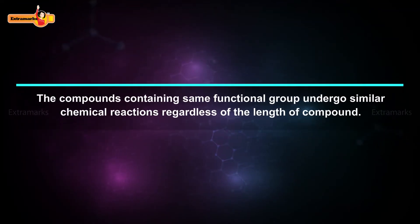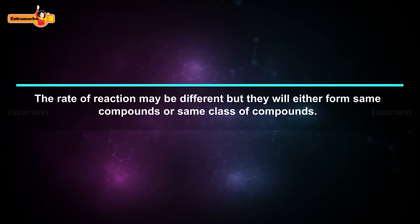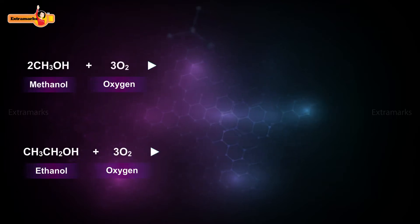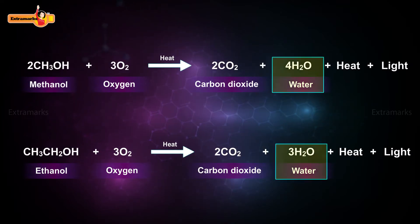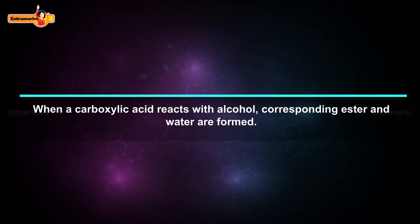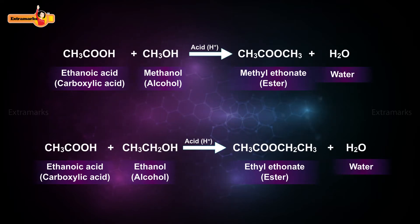The compounds containing same functional group undergo similar chemical reactions regardless of the length of compound. The rate of reaction may be different but they will either form same compounds or same class of compounds. For example, the combustion products of both methanol and ethanol are same that is carbon dioxide and water. When a carboxylic acid reacts with alcohol, corresponding ester and water are formed. Here two different esters are formed by the reaction of different alcohols with the same carboxylic acid.